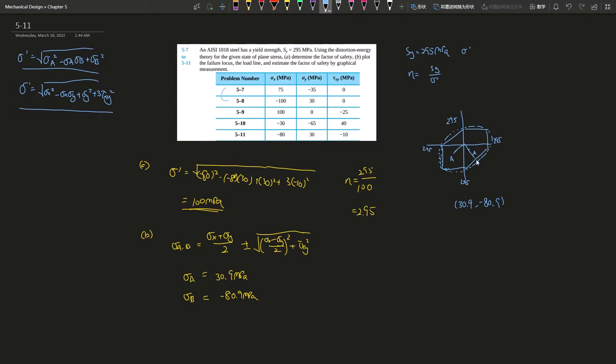So you extend it all the way to where it touches the line at von Mises, and the distance from O to A divided by O to B—this is the factor of safety.